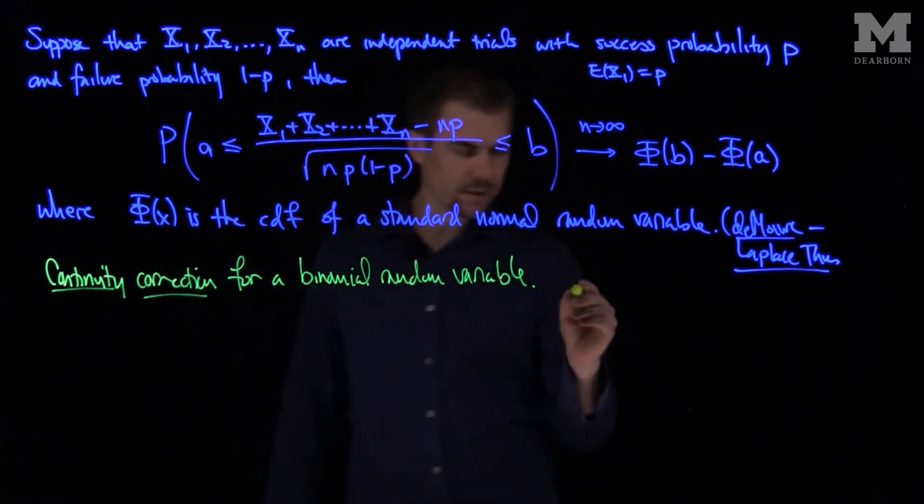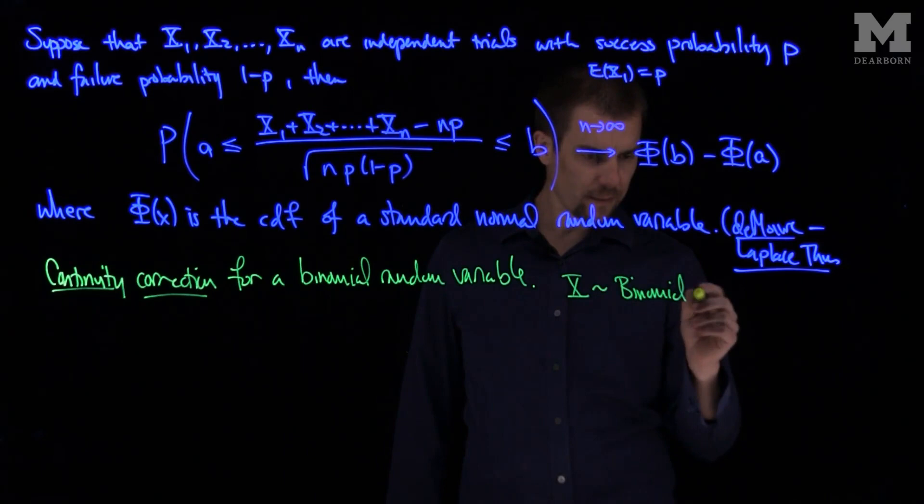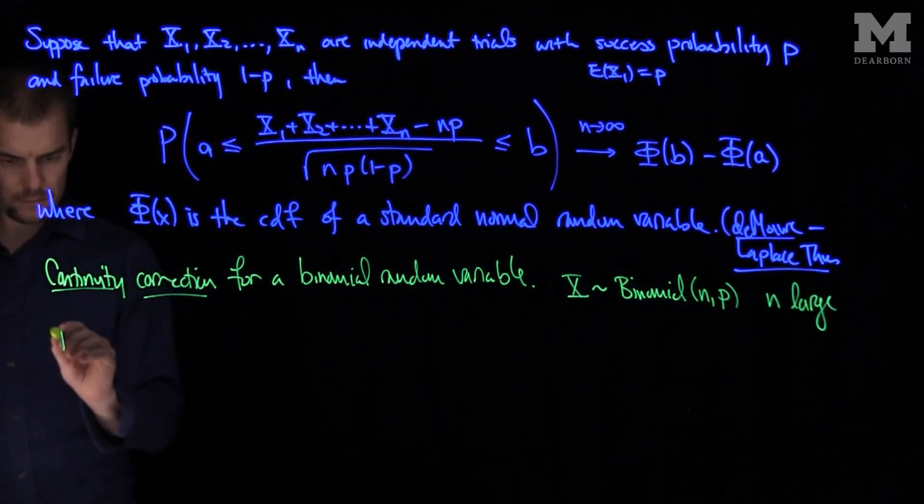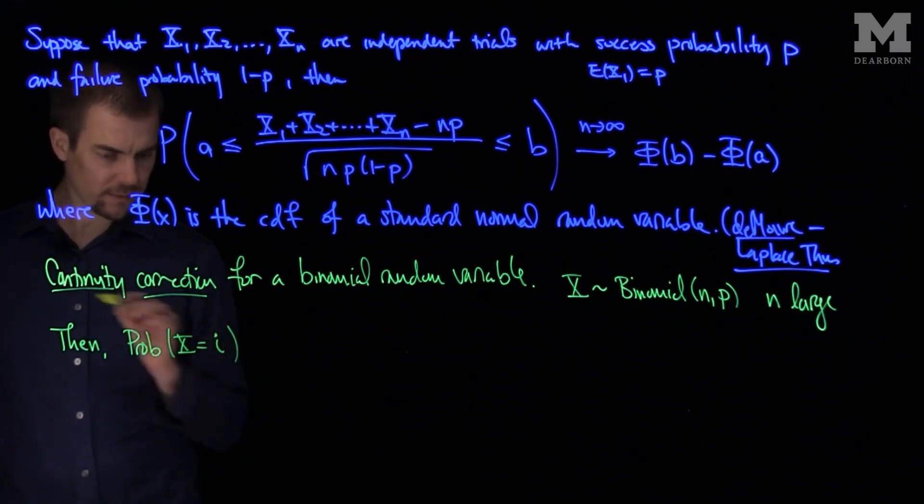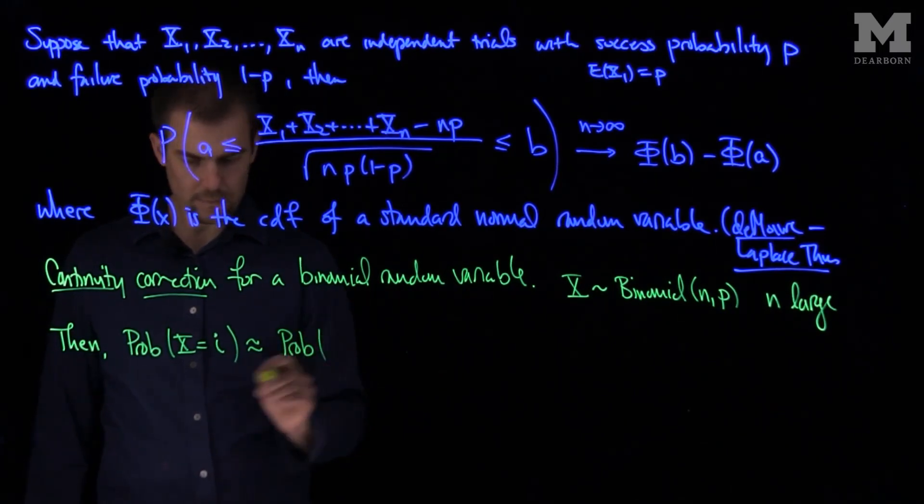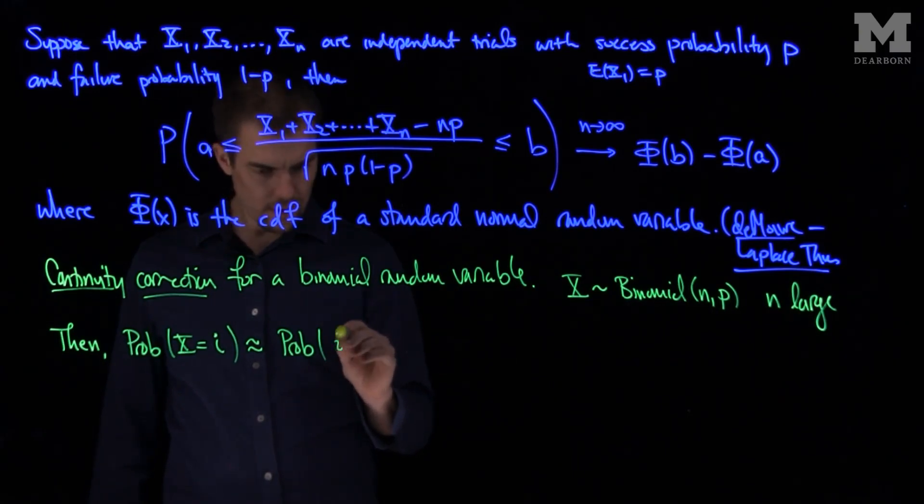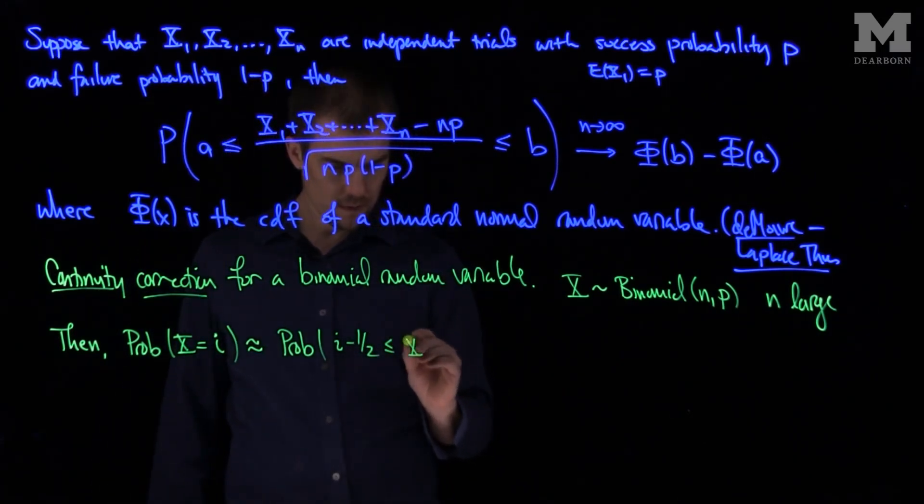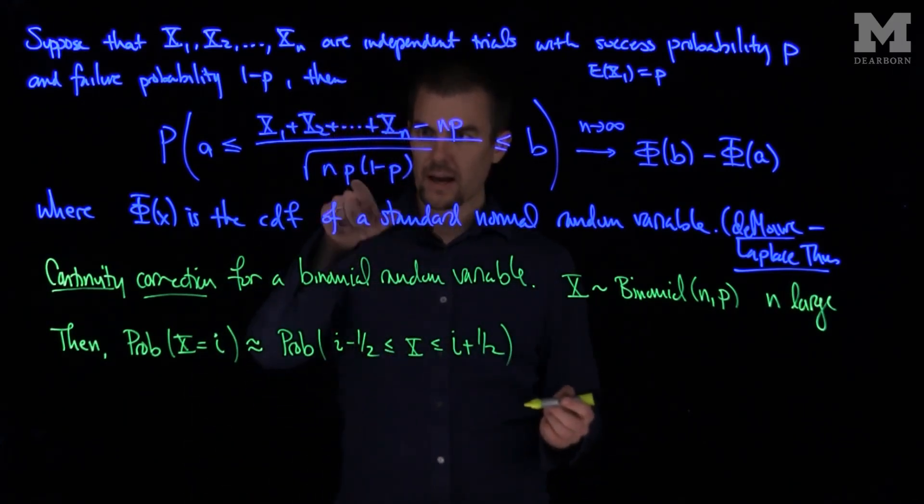So what we'll do is if x is binomial n and p, and n is large, then we can compute the probability that x equals i by saying that this is approximately the probability that x is between i minus one-half and i plus one-half, and we subtract off n times p.